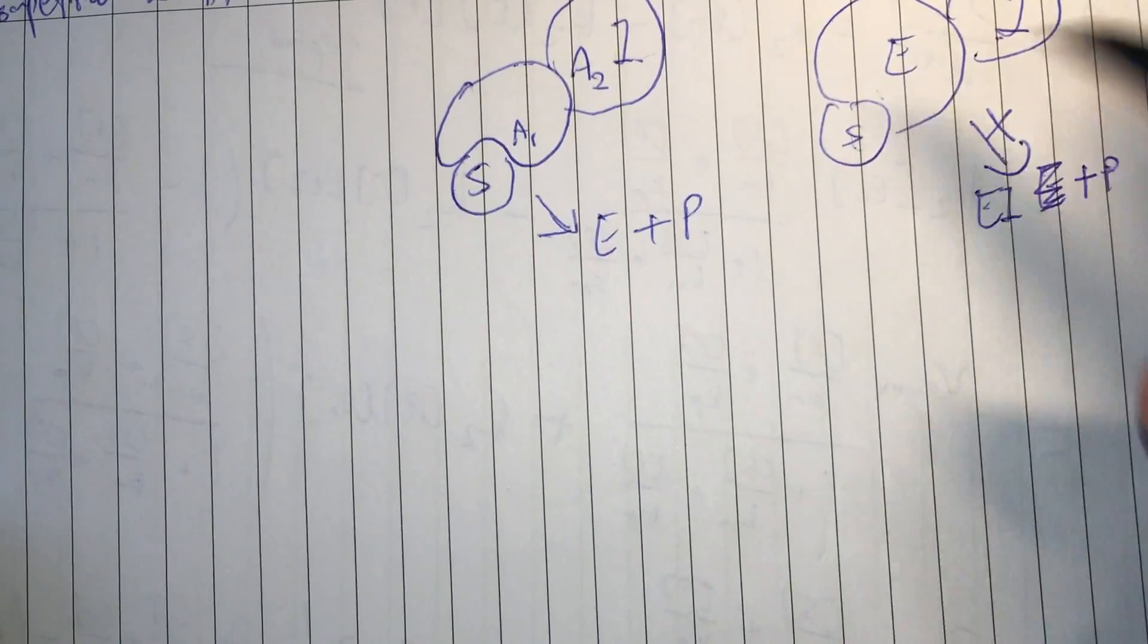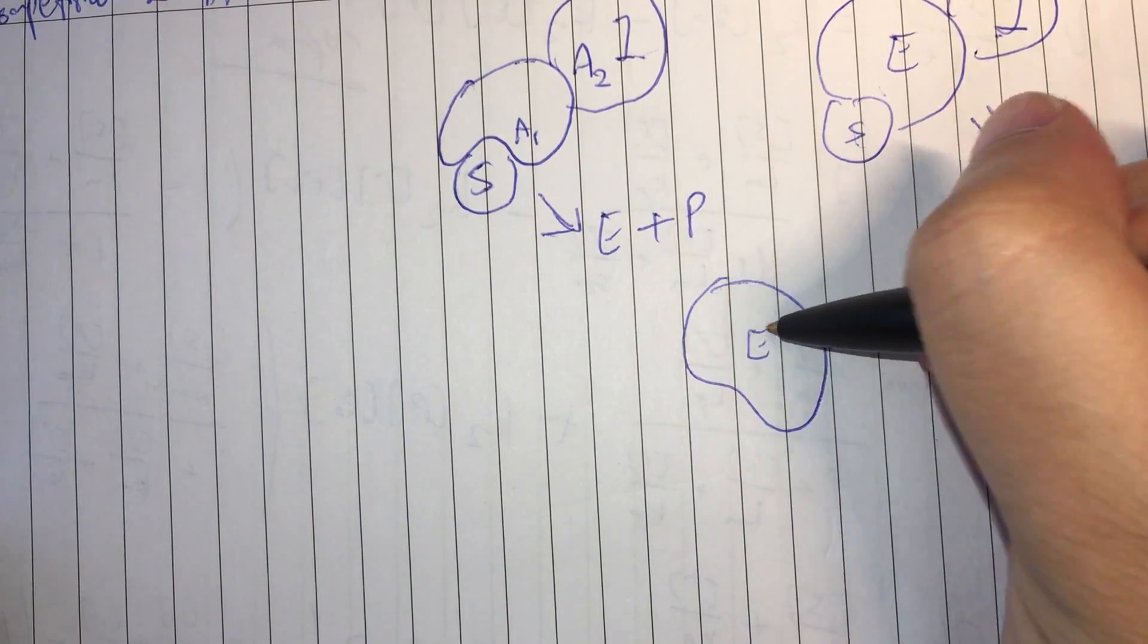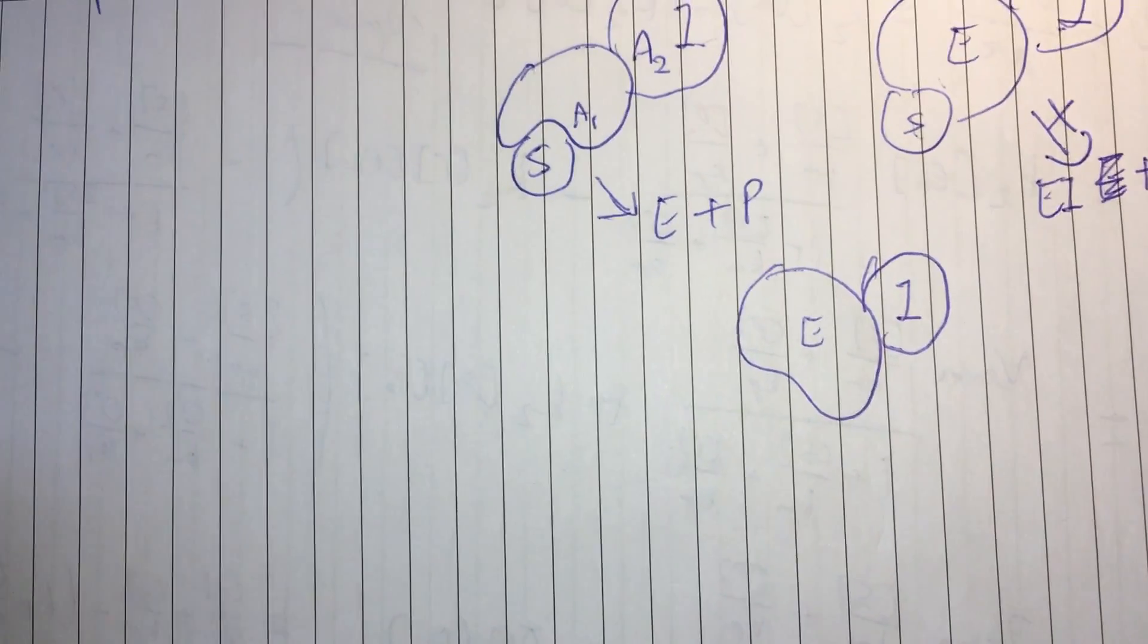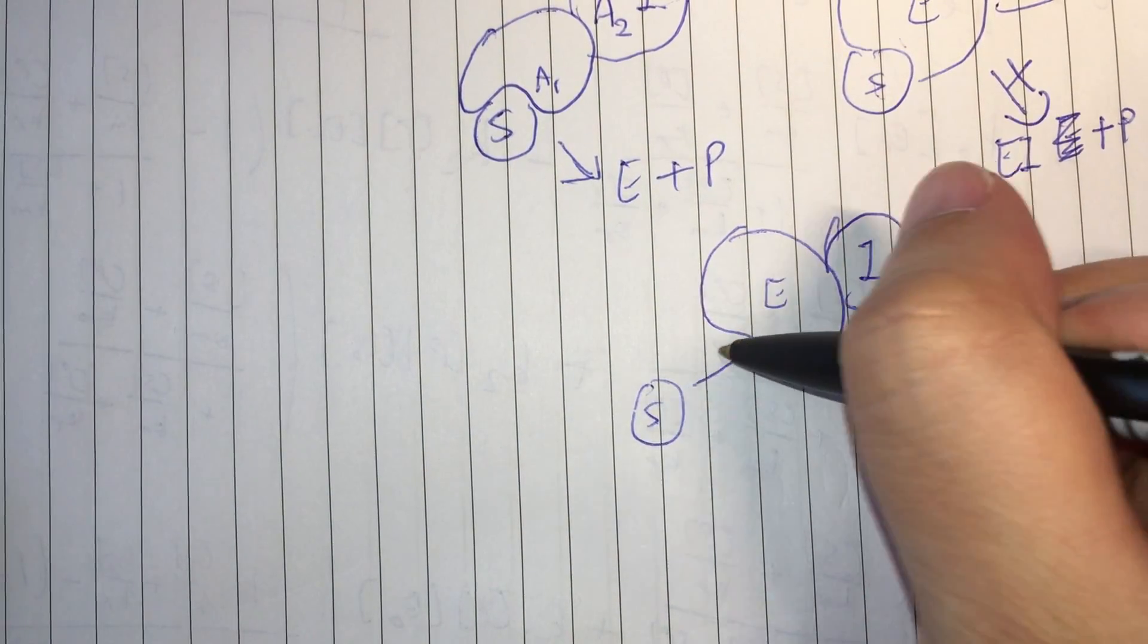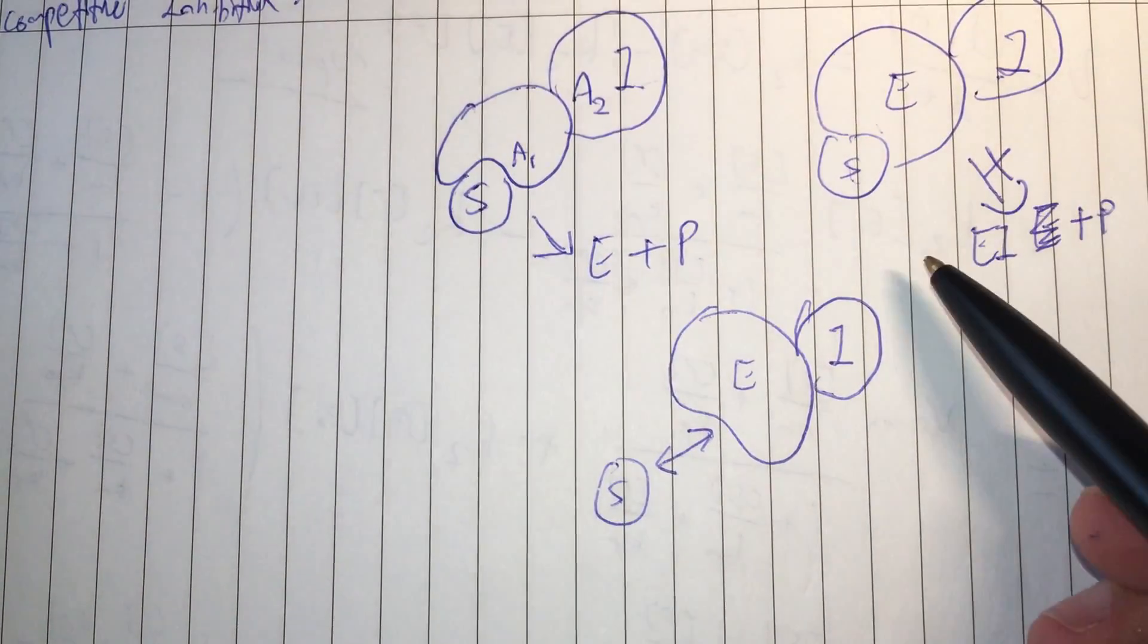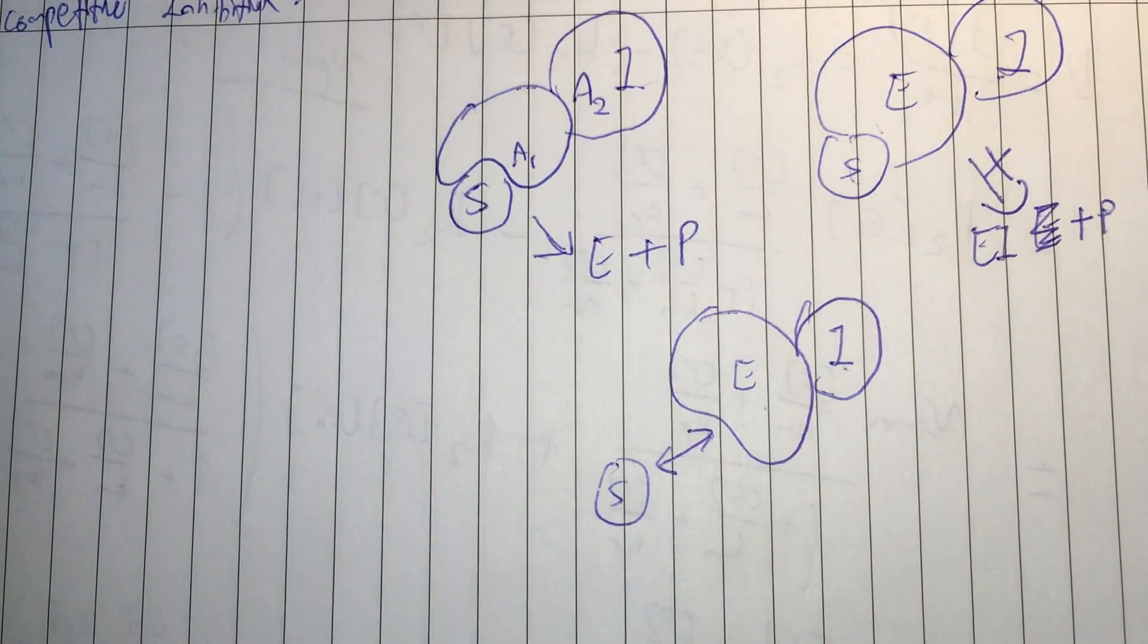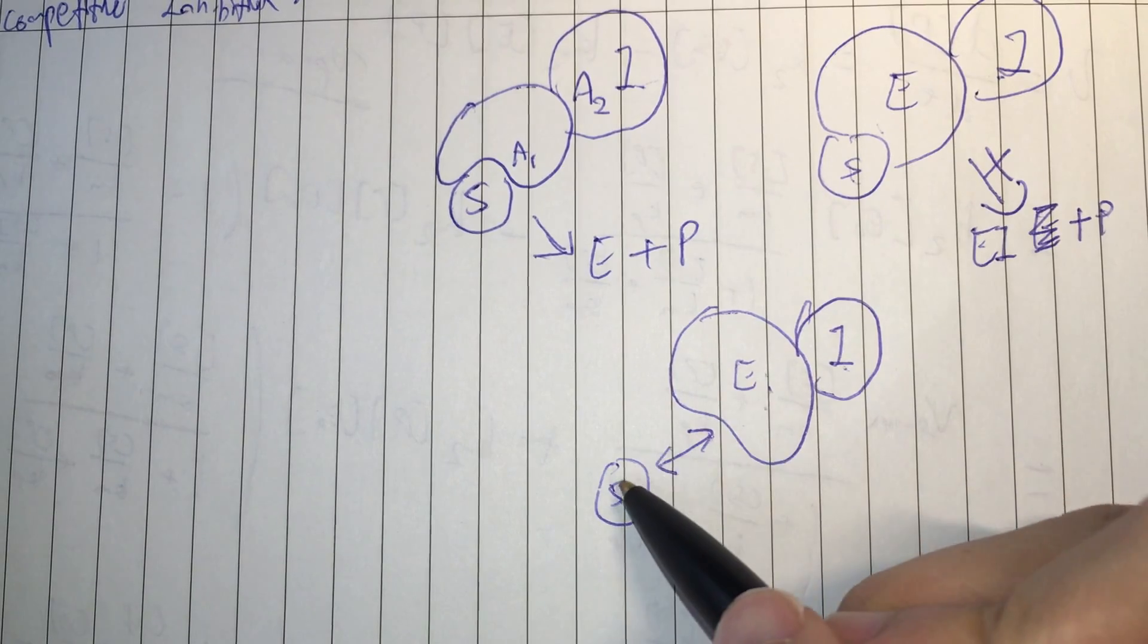However, if you have this situation where you have an enzyme-inhibitor complex, the substrate can still bind to the enzyme active site without any issue. So in fact, what we are assuming here is that the binding of the inhibitor to the enzyme does not in any way affect the binding of the enzyme to the substrate.